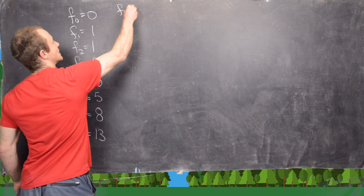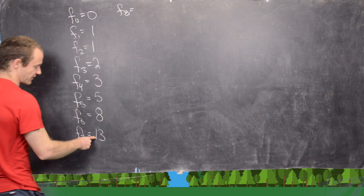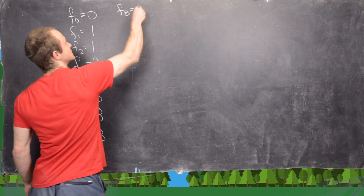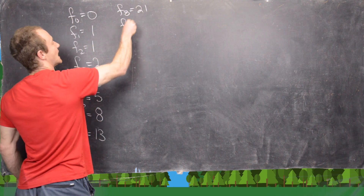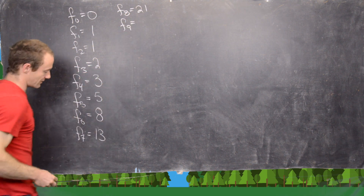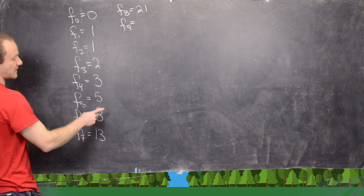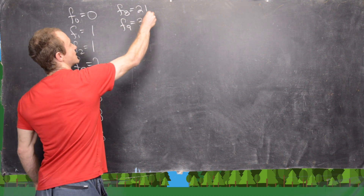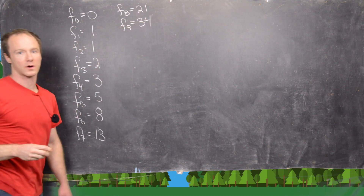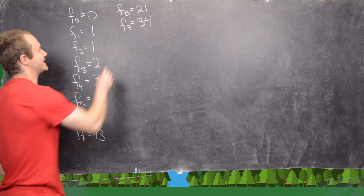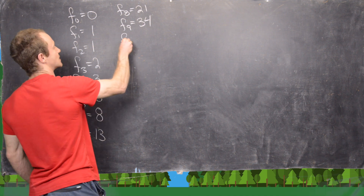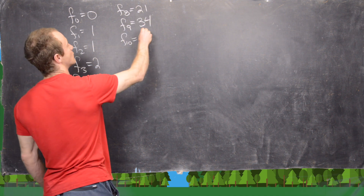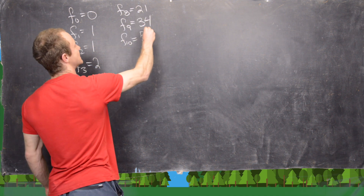The eighth Fibonacci number will be 13 plus 8, which is 21. The ninth Fibonacci number will be 13 plus 21, which is 34. The 10th Fibonacci number is 34 plus 21, which is 55.